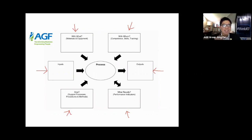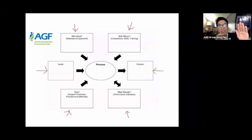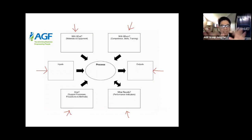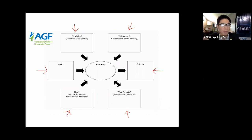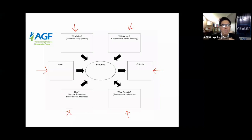The head represents inputs — what are the inputs to this process? In ISO auditing, when auditing ISO 9001, there are two types of audit: system audit and process audit. A system audit is a broad look at the functionality, adequacy, compliance, and effectiveness of the system — auditing clauses 4 through 10. That's normally conducted by the lead auditor who checks all elements of the system.